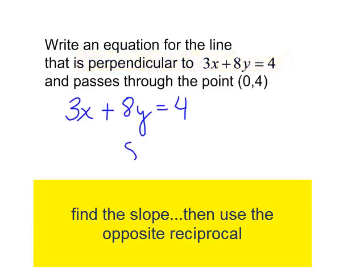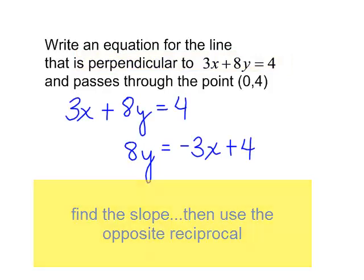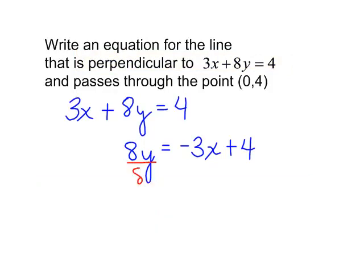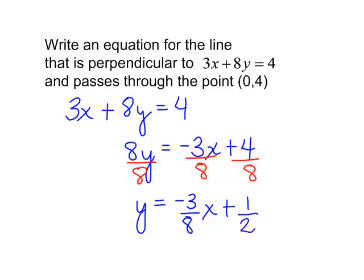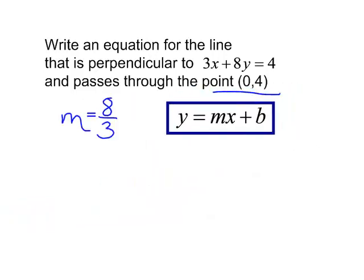Subtract 3x from both sides. I will now divide everything by 8. Y will equal negative 3 eighths x plus 4 eighths. I could reduce that to 1 half. The slope of this line is negative 3 eighths, but remember it said I wanted my line to be perpendicular to this line. I will not use negative 3 eighths. I will use positive 8 over 3.